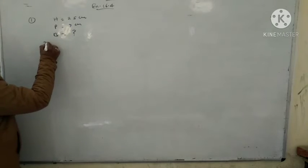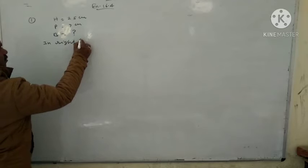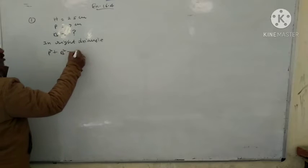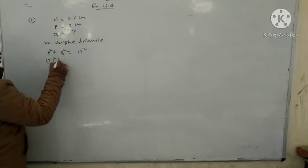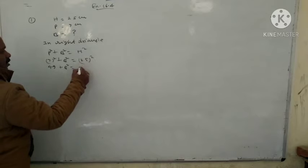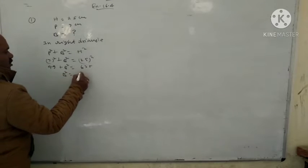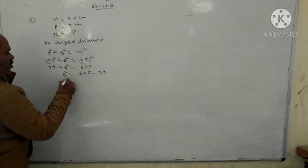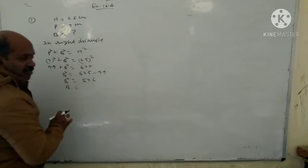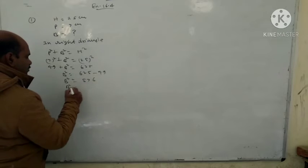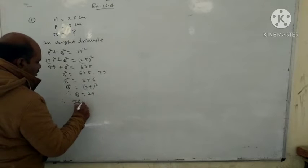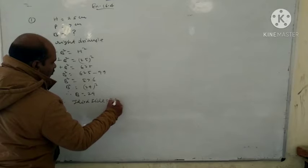So in a right triangle: perpendicular square plus base square equals hypotenuse square. So 7 square plus base square equals 25 square. That gives 49 plus B square equals 625. So B square equals 625 minus 49, which is 576. Since 576 equals 24 square, therefore B equals 24. Therefore the third side is 24 cm.